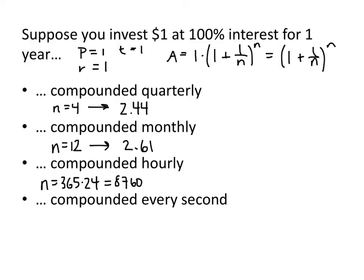So when we plug that value of n into our formula, we might expect to get a whole lot more money. And it turns out that we definitely get more money, but maybe not a lot more money. We get 2.718, just under $2.72.